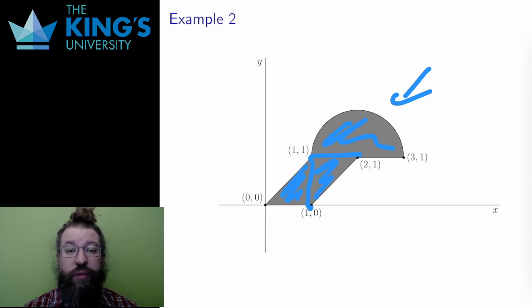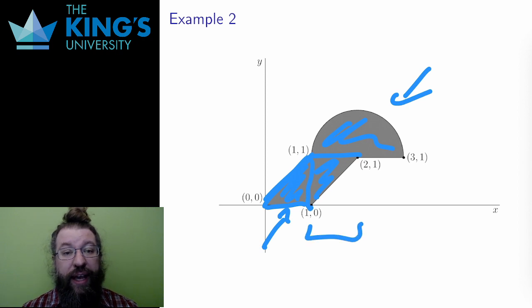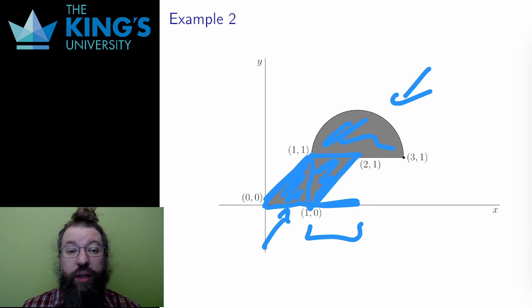For the first triangle, like I did in the previous video, I can integrate from 0 to 1 in x, and then from 0 to y = x in y. For the second triangle, I can integrate from 1 to 2 in y. The lower line is y = x - 1, and the top line is y = 1, so the y bounds are x - 1 to 1.